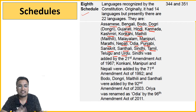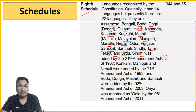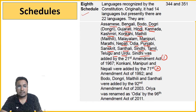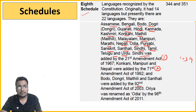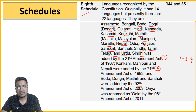Regarding amendments to the 8th Schedule: Sindhi was added first by the 21st Amendment in 1967. Then Konkani, Manipuri and Nepali were added by the 71st Amendment in 1992. Then Bodo, Dongri, Maithili and Santhali were added by the 92nd Amendment in 2003. Finally Odia — which was also renamed — was added by the 96th Amendment in 2011. Originally there were 13 languages and 9 were added later through amendments.